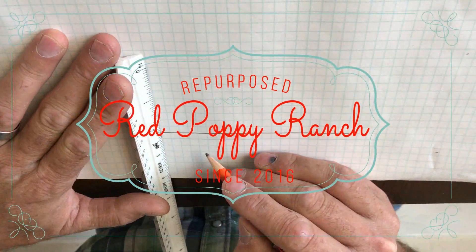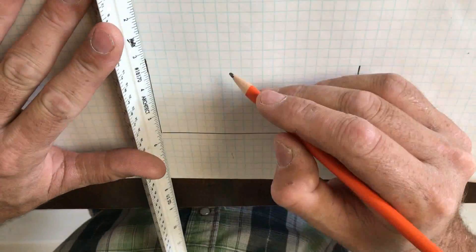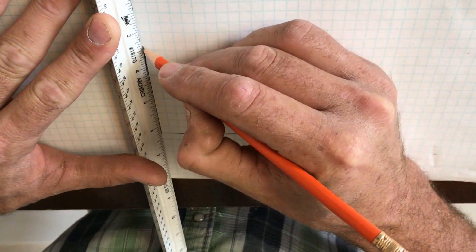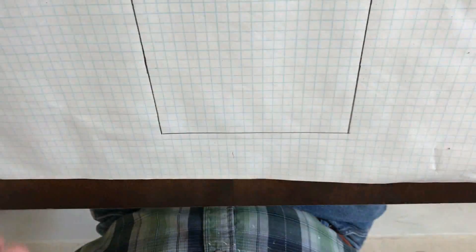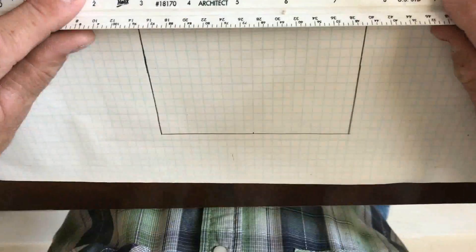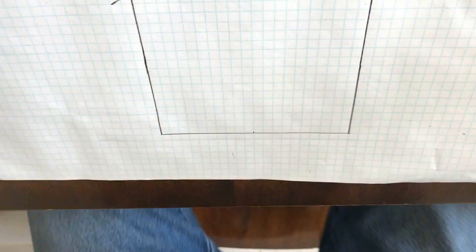We are days away from starting framing on the shop house. I need to make one final materials list specifically for lumber. And the best way I know how to do this is to draw the shop house to scale on graph paper.